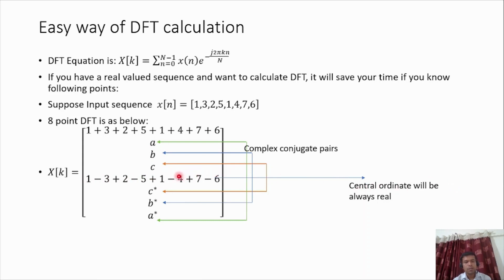In this case, the X[1], the second element, will always be a complex conjugate of the last element. Then B will be a complex conjugate of the corresponding element as shown. We have to calculate only half of the elements here. The central element will also be a complex conjugate, but this is possible only when the sequence is real, because a real number itself is a complex conjugate of itself.